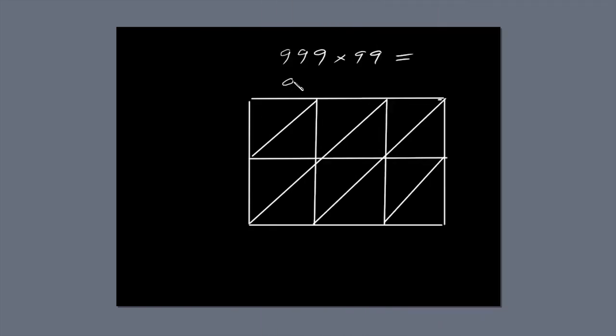Next, write the first number, 999, along the top of the box so each digit lines up with a column. Write 99 down the right hand side of the box so each digit lines up with a row.